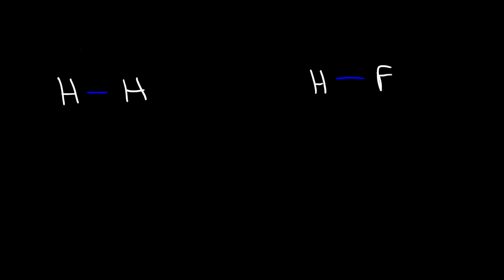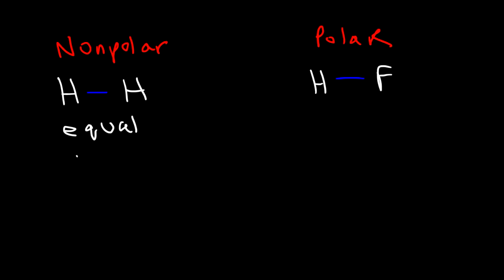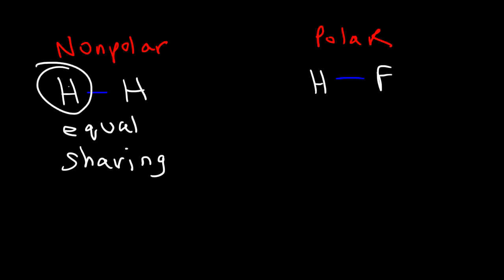Let's use HF and H₂ as examples. Hydrogen gas is a non-polar molecule, so the bond is non-polar. HF has a polar bond. Both of these bonds are covalent because electrons are being shared. However, in a non-polar covalent bond you have equal sharing of electrons. The sharing is equal because the two hydrogen atoms are equivalent — they have the same electronegativity value of 2.1. In HF, the electronegativity values are not the same.